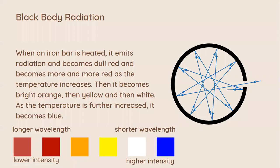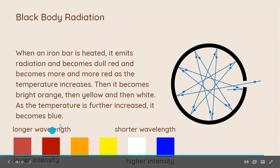So let's start with black body radiation. When a piece of iron is heated, it changes in color. When it emits radiation, first it becomes dull red in color. Then as the temperature continues to increase, it becomes bright red, then bright orange, then bright yellow, then white, and then it turns blue after further heating.